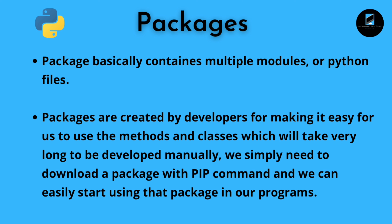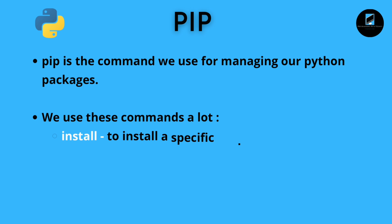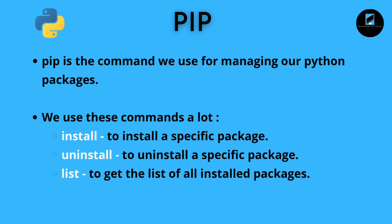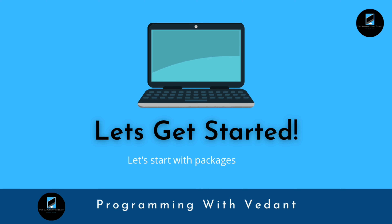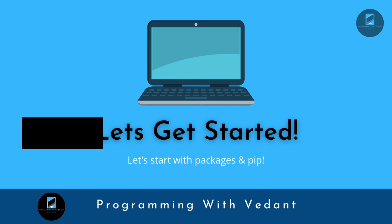We simply need to download those packages and we can directly use them in our programs. We can download these packages using the pip command. Pip is the command we use for managing our Python packages. The most important pip commands are: install to install a specific package, uninstall to remove a specific package, and list to show all installed packages on your current system.